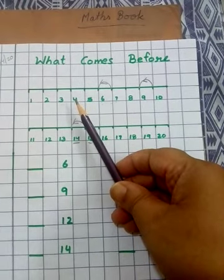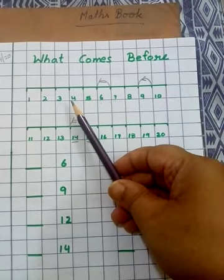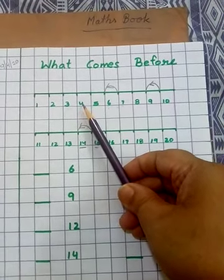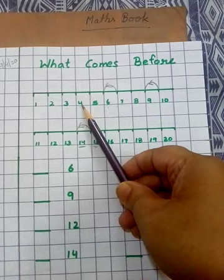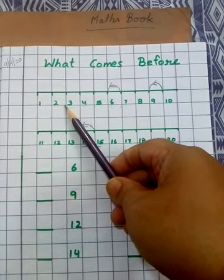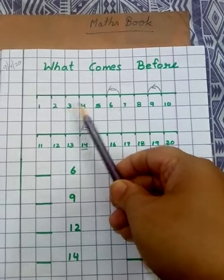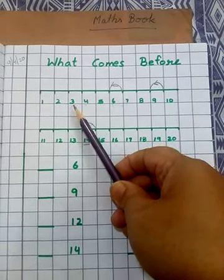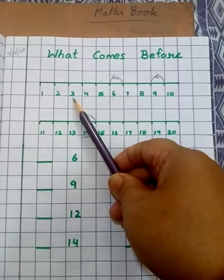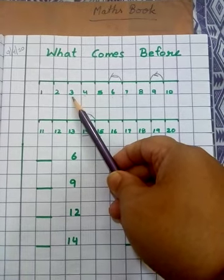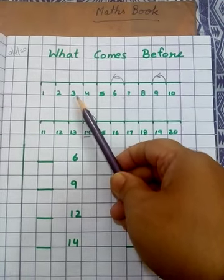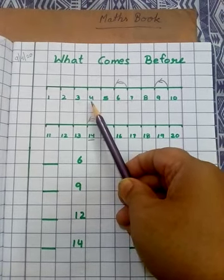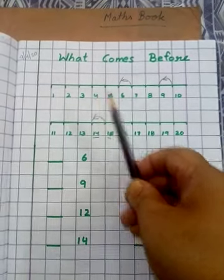When we ask what comes before 4, it means 4 से backward direction में count करना है और just next to 4 is 3. तो 3 is — 3 comes before 4. What comes before 4? It's 3.